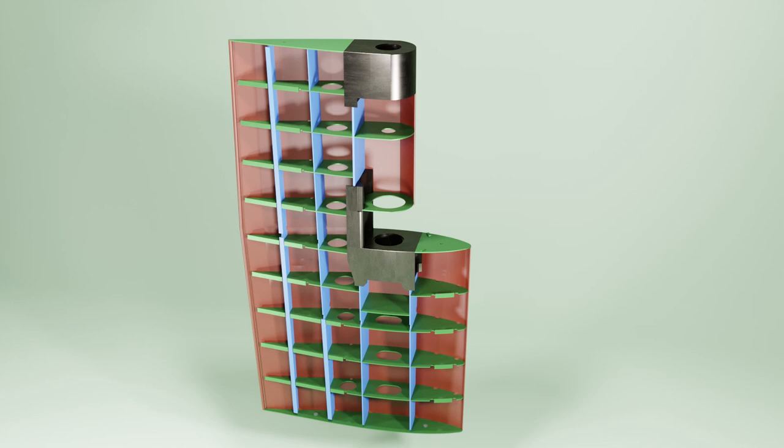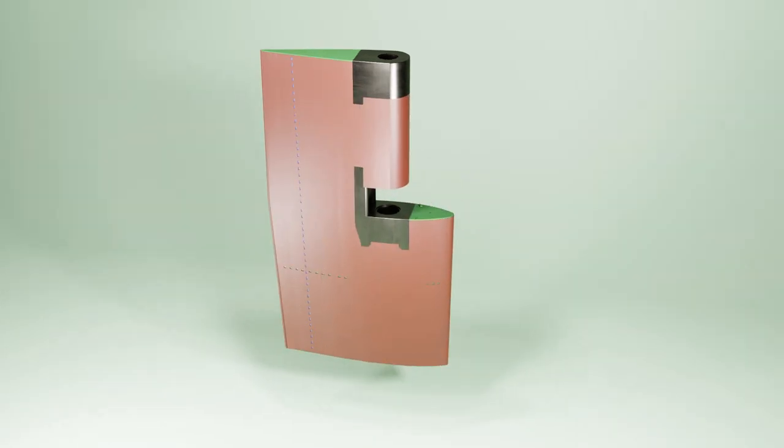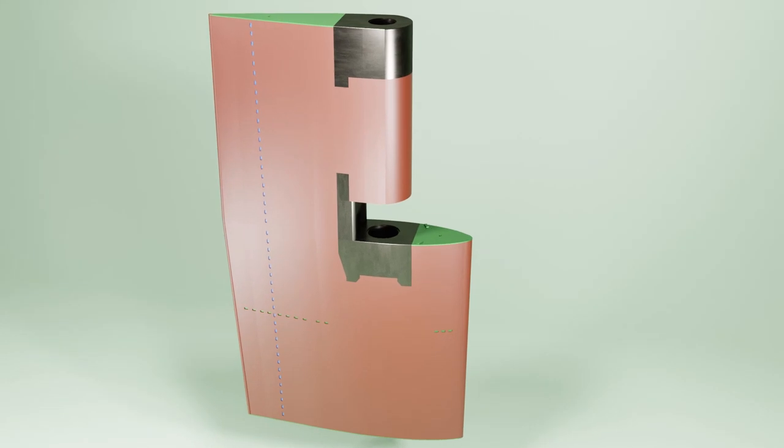However, it wouldn't be possible to weld the external plates in the same way on the starboard side because the internal structure wouldn't be accessible anymore. To solve this problem, external plates on the starboard side has slots cut in them near the flat bars. This would allow the external plates to be welded to the flat bars through these slots, thus securing them to the internal structure. This is called slot welding.